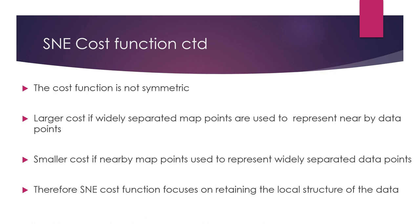When you consider this cost function in SNE, it is not symmetric. That means the cost allocated for each data point will not be equal. The main reason is that the main objective of SNE is to preserve the local structure of the data. Because of that, it assigns a very large cost if you use widely separated map points to represent nearby data points, and it allocates a very small cost if you use nearby map points to represent widely separated data points.